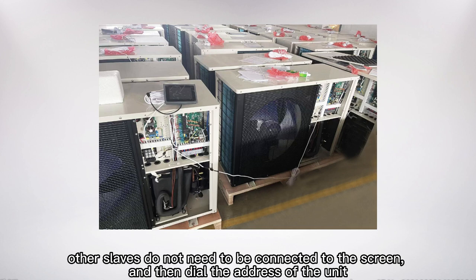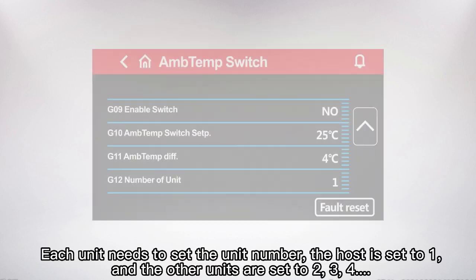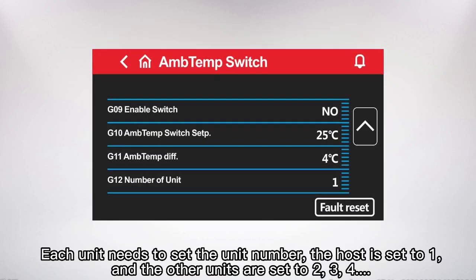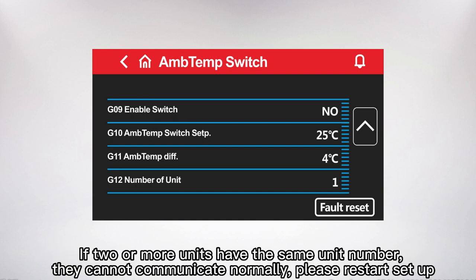Then dial the address of the unit. Each unit needs to set its unit number. The host is set to 1 and the other units are set to 2, 3, 4. If two or more units have the same unit number, they cannot communicate normally. Please restart and redo the setup.